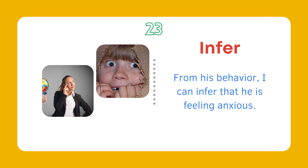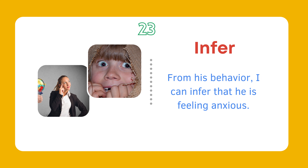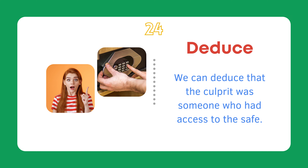Infer. From his behavior, I can infer that he is feeling anxious. Deduce. We can deduce that the culprit was someone who had access to the safe.